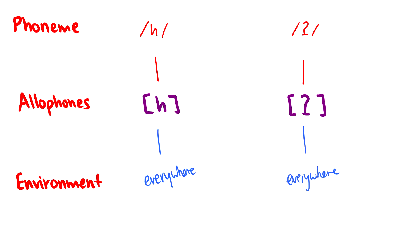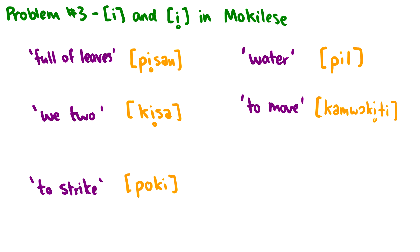Okay. So using minimal pairs really helped us there. In fact, it made us solve this problem pretty quickly. But let's take a look at this third problem, which is [i] and [i̥] in Mokilese. So this [i̥] with the circle under it is what we call a voiceless or de-voiced [i]. So in the words, there's no voice, there's no vibrations when we pronounce [i]. And this sounds like [i̥]. So I have five words here. I have [pisan], [kisa], [poki], [pil], and [kamuokiti].